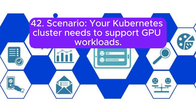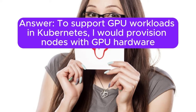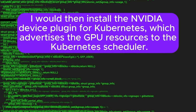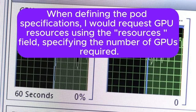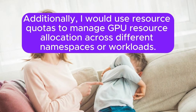Scenario 42: Your Kubernetes cluster needs to support GPU workloads. How would you configure the cluster and schedule GPU pods? Answer: To support GPU workloads in Kubernetes, I would provision nodes with GPU hardware and install the necessary GPU drivers, for example NVIDIA drivers. I would then install the NVIDIA device plugin for Kubernetes, which advertises the GPU resources to the Kubernetes scheduler. When defining the pod specifications, I would request GPU resources using the resources field, specifying the number of GPUs required. Kubernetes would then schedule the GPU pods on nodes with available GPU resources. Additionally, I would use resource quotas to manage GPU resource allocation across different namespaces or workloads.